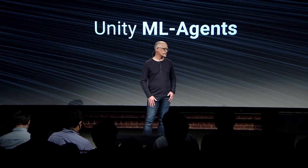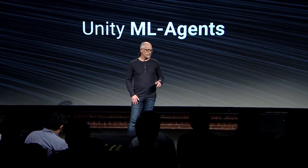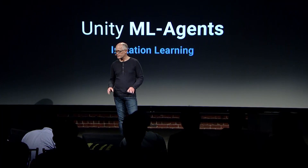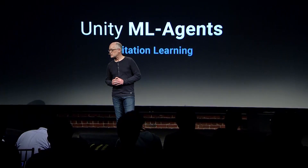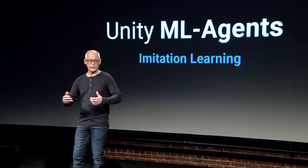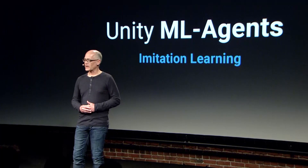In our latest release of ML Agents .3, we have many new features, but there's one very important feature called imitation learning. With imitation learning, a system can learn from real people playing, and it can be trained to adjust to your players. Instead of building an NPC through conventional code, writing lines and lines of C-sharp, you can create it through imitation learning, which will deal with your game environment in a much more organic manner.